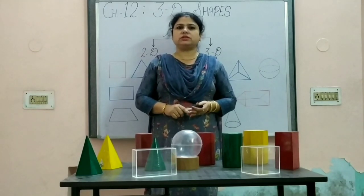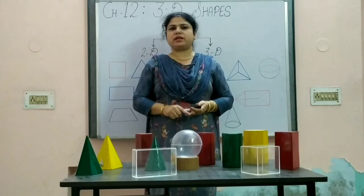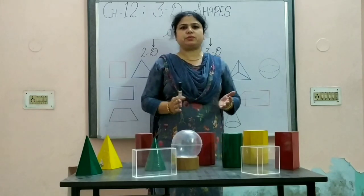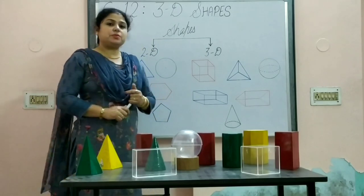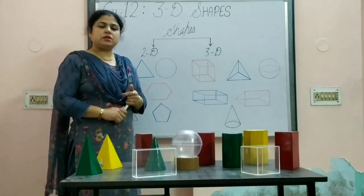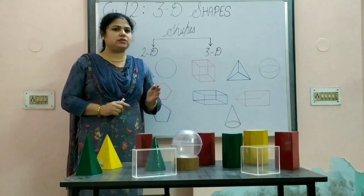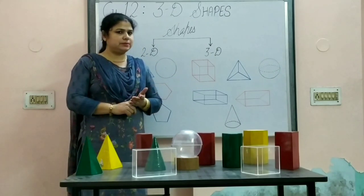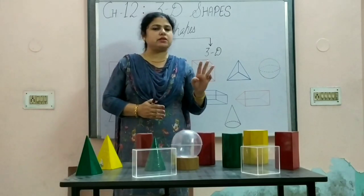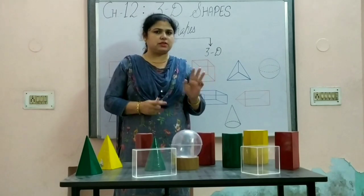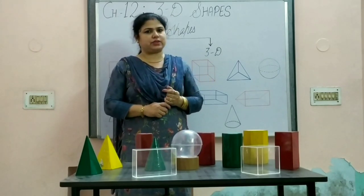To learn about 3D shapes, it will be much better if I differentiate between 2D and 3D shapes. So 2D shapes are the shapes which have only two dimensions — length and breadth — and 3D shapes are the shapes which have three dimensions: length, breadth, and height as well.